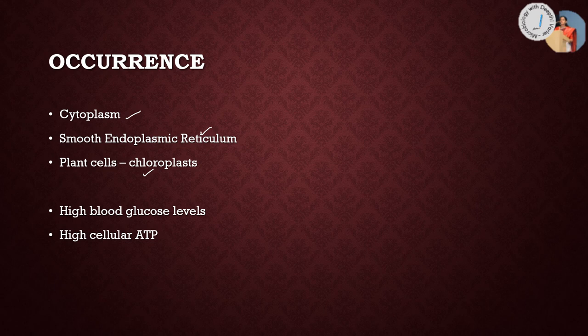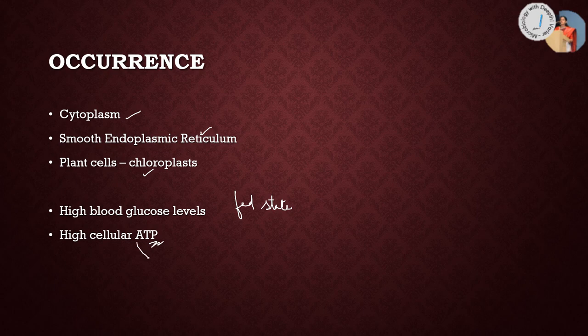When does fatty acid synthesis take place? It occurs when blood glucose levels are high — when the person is in a fed state, meaning they are eating or absorbing food. Not only that, when cellular ATP is high it also triggers fatty acid synthesis. This is the body's indication that there is already a lot of energy, so it stops breaking down molecules and starts synthesizing new ones to store energy. These are the conditions under which fatty acid synthesis occurs.